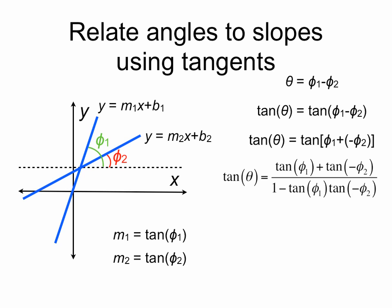The tangent of theta equals the tan of phi1 plus the tan of minus phi2, all over 1 minus tan of phi1 times tan of minus phi2. We can replace the tan of minus phi2 terms using the relation that tan of minus x equals minus tan of x, since tangent is an odd function.